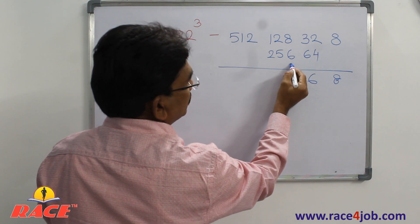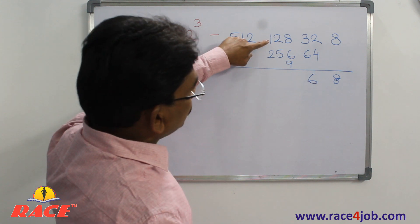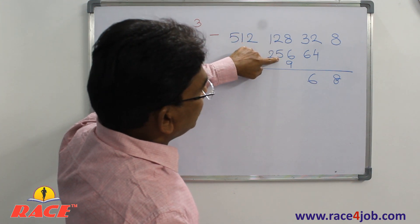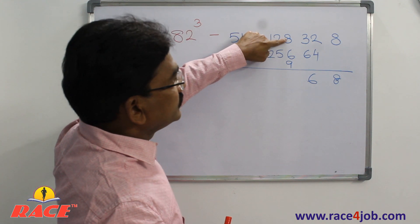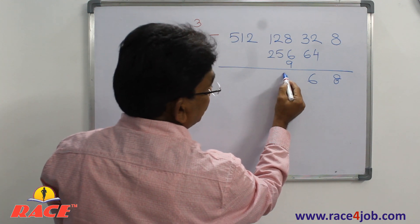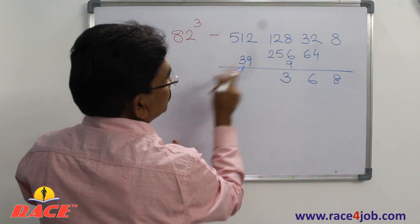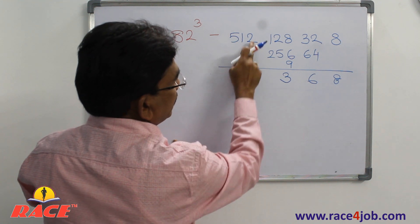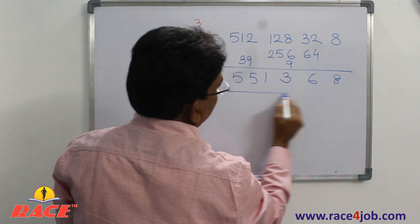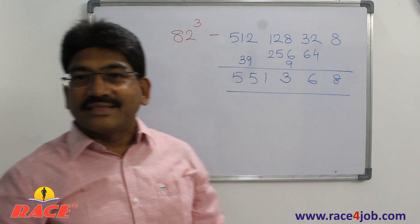Now add. From 8 and 64: total 72 — write only 2, carry 7... actually write 6, carry 9. Adding with the carries, the running total reaches 393; write 3, carry 39. Then 512 plus 39 is 551. So the answer is 551368. Eighty-two cubed is 551368.